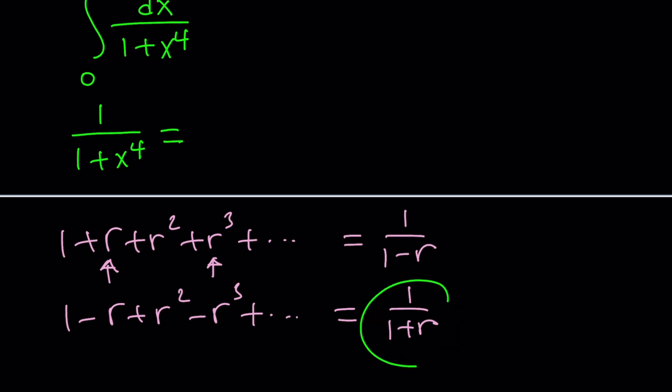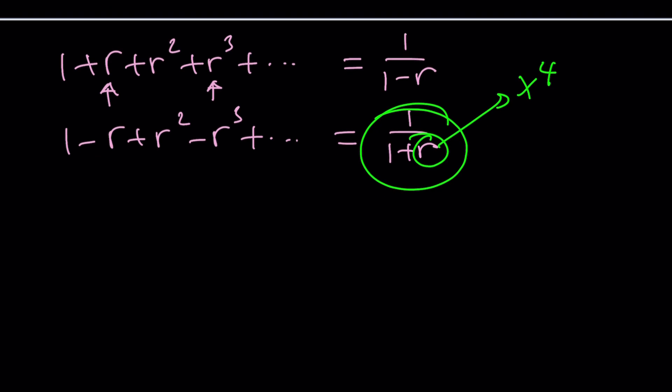And we're going to replace r with x^4. Exactly. Because we're looking for 1/(1 + x^4), and that's going to be coming from the left-hand side, which is now on the right-hand side. So it's going to look like this: 1 - x^4 + x^8, because I'm squaring x^4, and then minus x^12, so on and so forth. This goes on forever. We know that it converges, so it's all good.